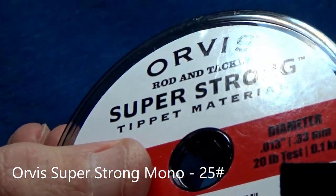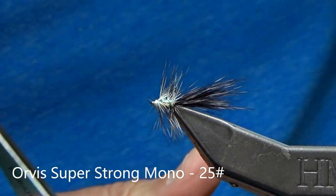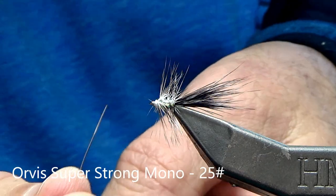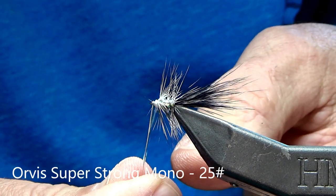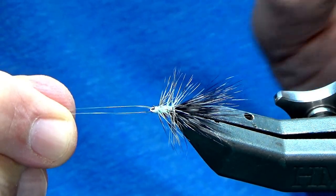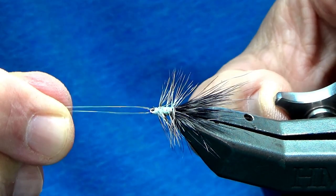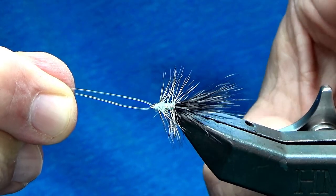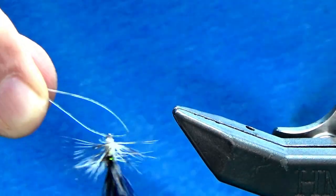Okay. So next, I'm going to use my Orvis. This is super strong mono. And it's 25 pounds. Just coming up through the eye here. Any mono will do. And just pull in a little bit. Put a little tension on it. And that's the tail.